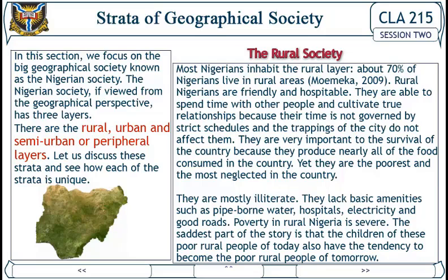In this section we focus on the big geographical society known as the Nigerian society. The Nigerian society, viewed from the geographical perspective, has three layers: the rural, urban, and semi-urban or peripheral layers. Let us discuss each of these structures and see how each one is unique.